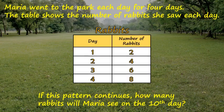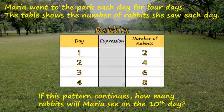First of all, we need to find a relationship between the day and the number of rabbits. So let's give ourselves some room to work on that. We want to find an expression that gets us from the day to the number of rabbits. So if we look at day one, how can we get to two as the number of rabbits?